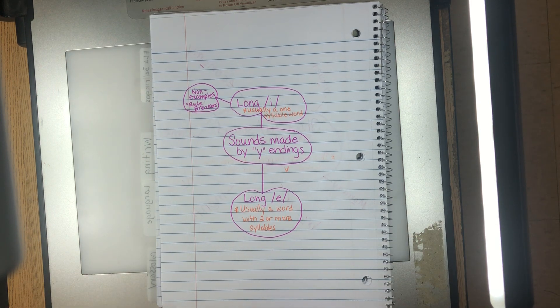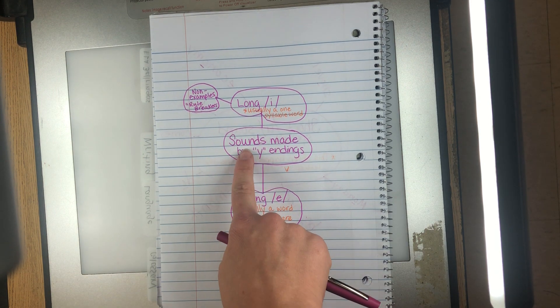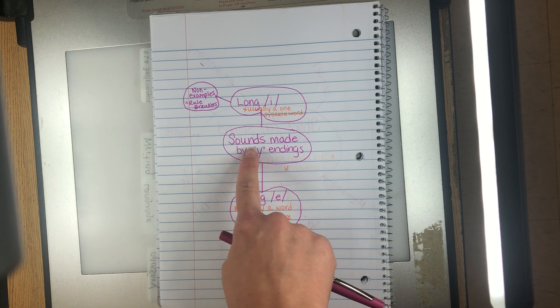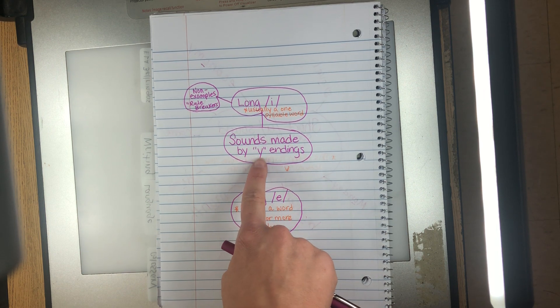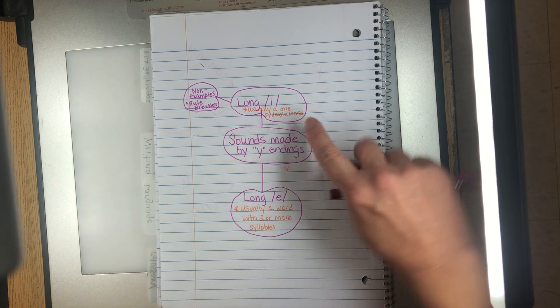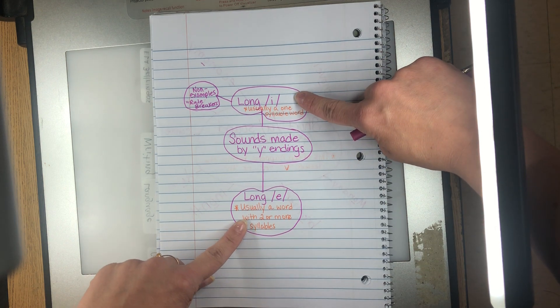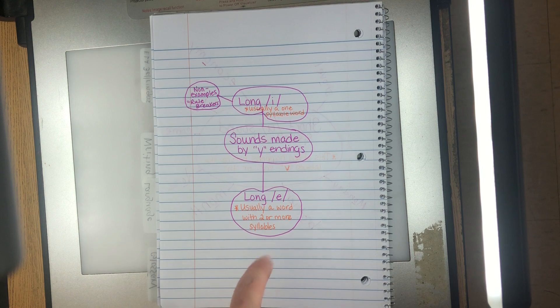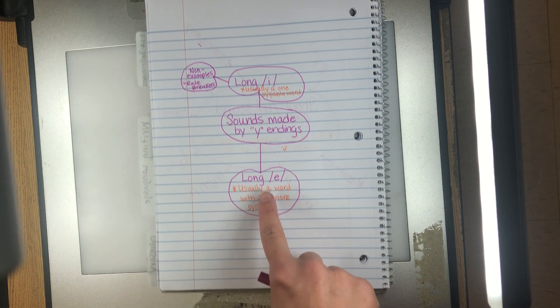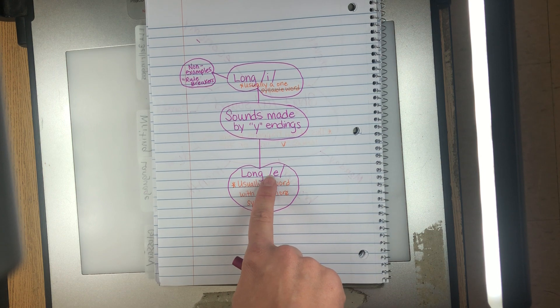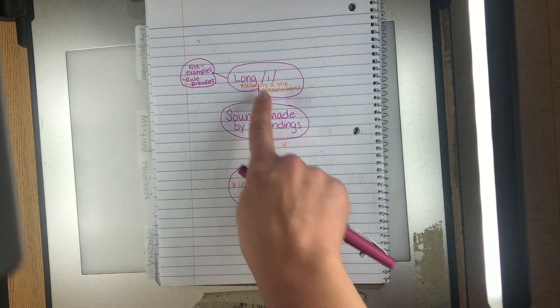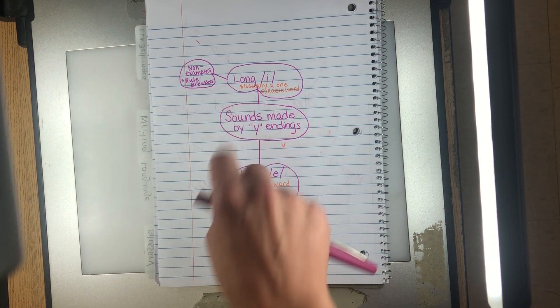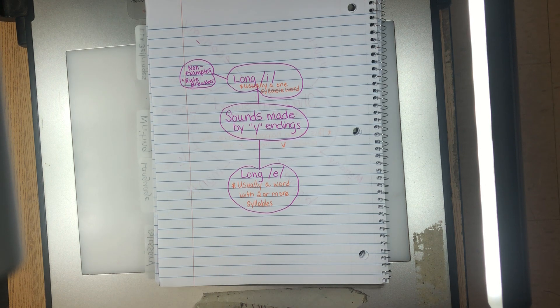Next, in that word economy was the ending, okay? So we're gonna make a web of words that have sounds made by the Y endings. We have two different sounds that we typically hear. We have a long I, so sometimes when a word ends with the letter Y, we hear it as I, or like economy, we hear it as a long E.